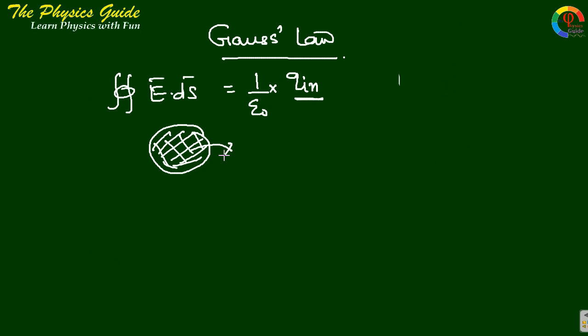For a continuous charge distribution throughout the volume within the boundary surface, let the charge per volume equal rho. Then the total charge q equals rho times volume.